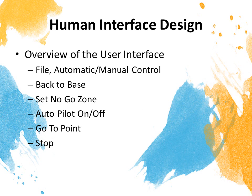SDD will also provide a UI design introduction. Our interface will have a save map file and load map file function, automatic and manual control to the robot. For manual control, there will be go forward, go backward, turn left and turn right. There will also be a back to base function and set no-go zone. Auto pilot can be turned on and off to start exploring the map, and a go-to-point function and immediate stop function to stop the robot at any time. There will also be a status display panel to display all the current robot status and the current robot location on the map, as well as the robot battery level display.